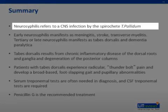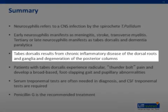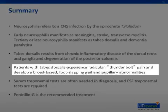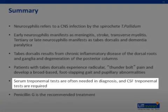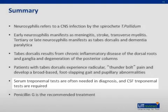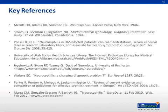In summary, neurosyphilis refers to a CNS infection by the spirochete Treponema pallidum. Early neurosyphilis manifests as meningitis, stroke, or transverse myelitis, while tertiary or late neurosyphilis manifests as tabes dorsalis and dementia paralytica. Tabes dorsalis results from inflammation of the dorsal roots and ganglia and degeneration of the posterior columns. Patients experience radicular lancinating pain and develop a broad-based foot-slapping gait and pupillary abnormalities. Serum treponemal tests are often needed in the diagnosis, CSF treponemal tests are required, and penicillin G is the recommended treatment.